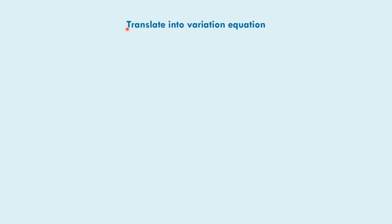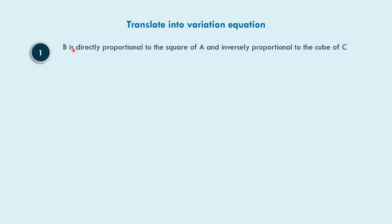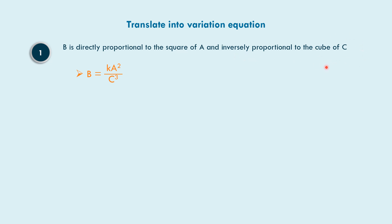Let us translate into variation equations. In example number one, b is directly proportional to the square of a and inversely proportional to the cube of c. The square of a is a squared, and the cube of c is c cubed. So, b is equal to k times a squared, all over c cubed.